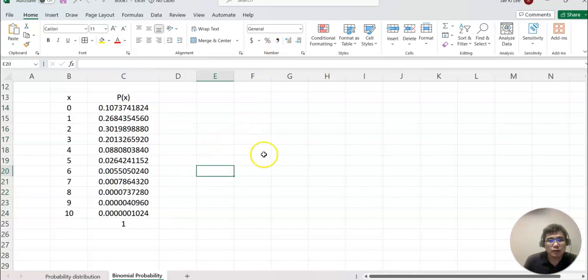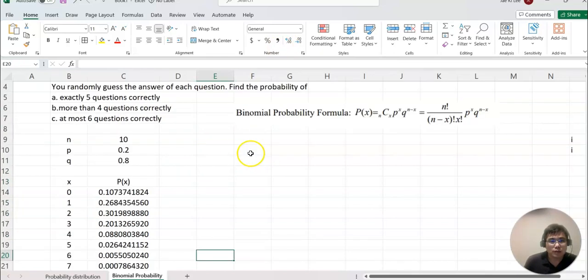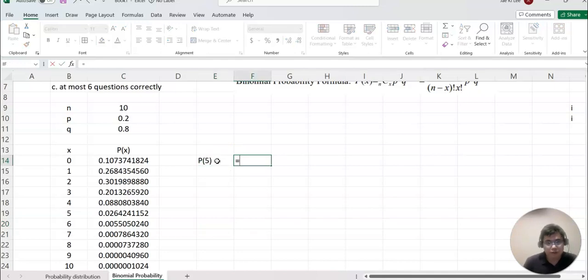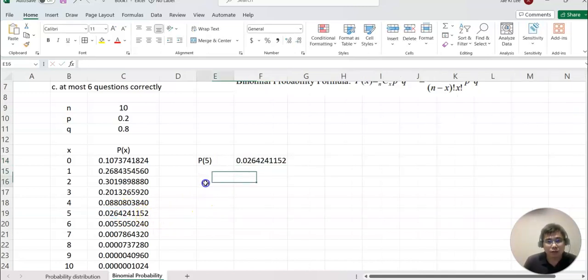Then now we can find those questions. Part a, exactly five questions correctly, so I can make probability five question correctly, which means basically here, so I can select and enter.